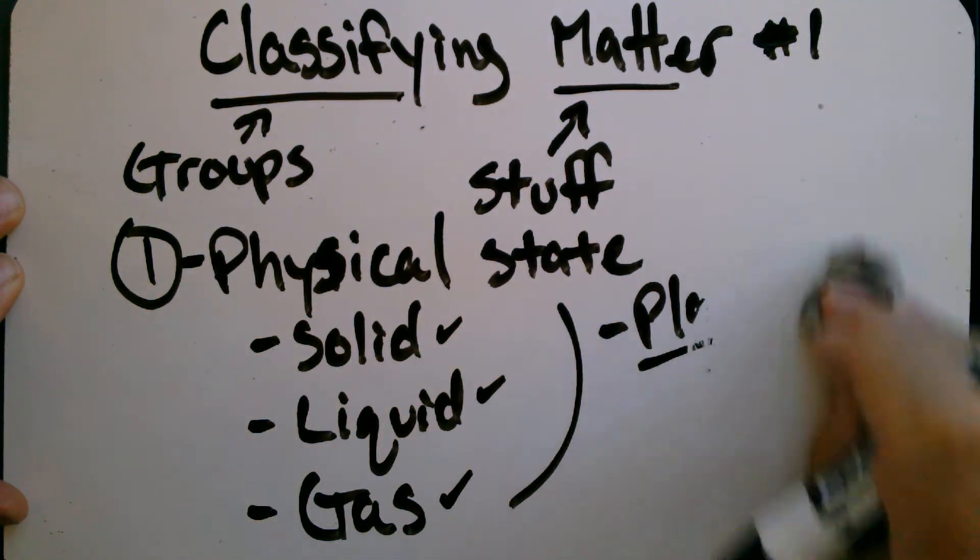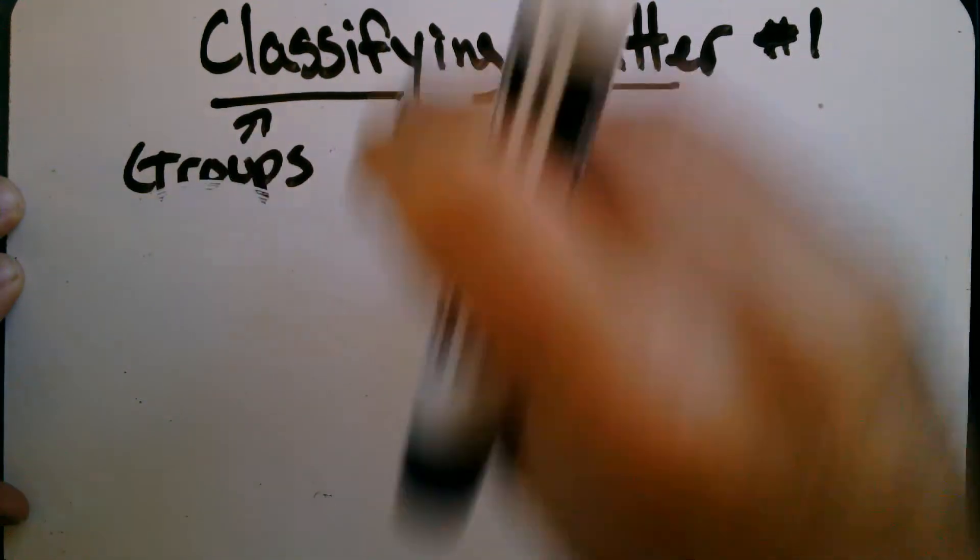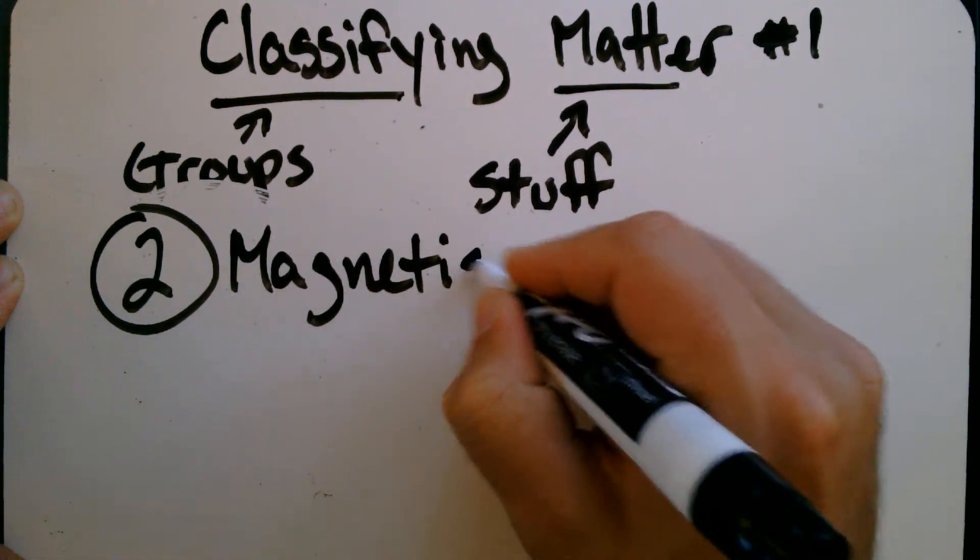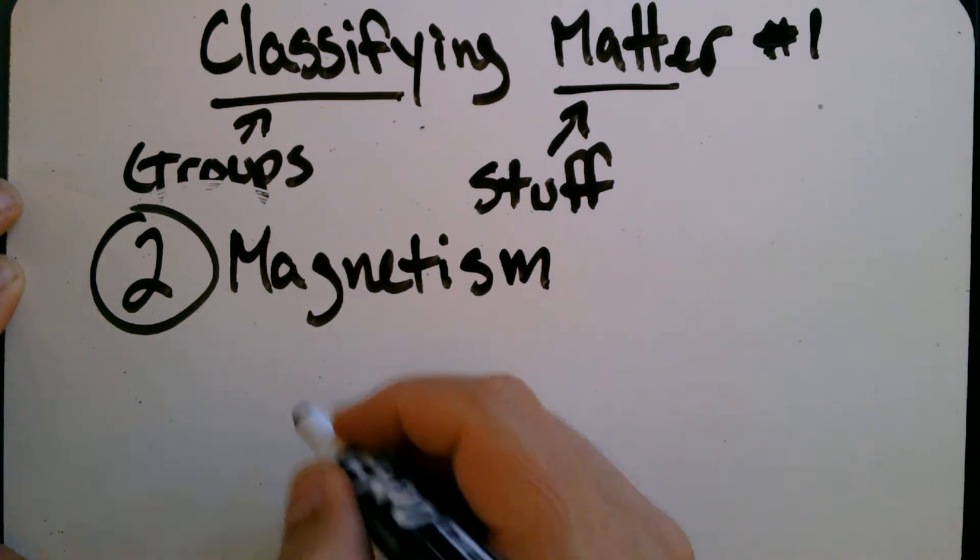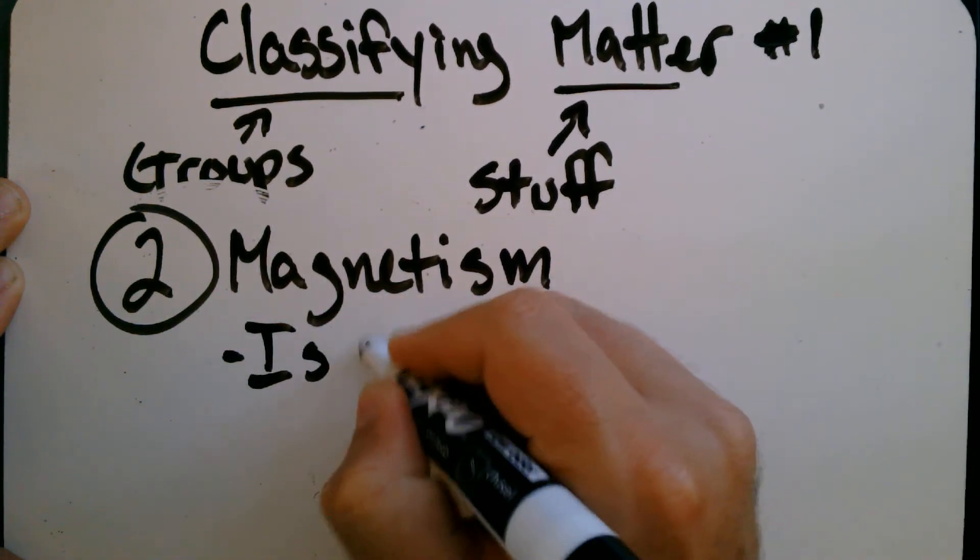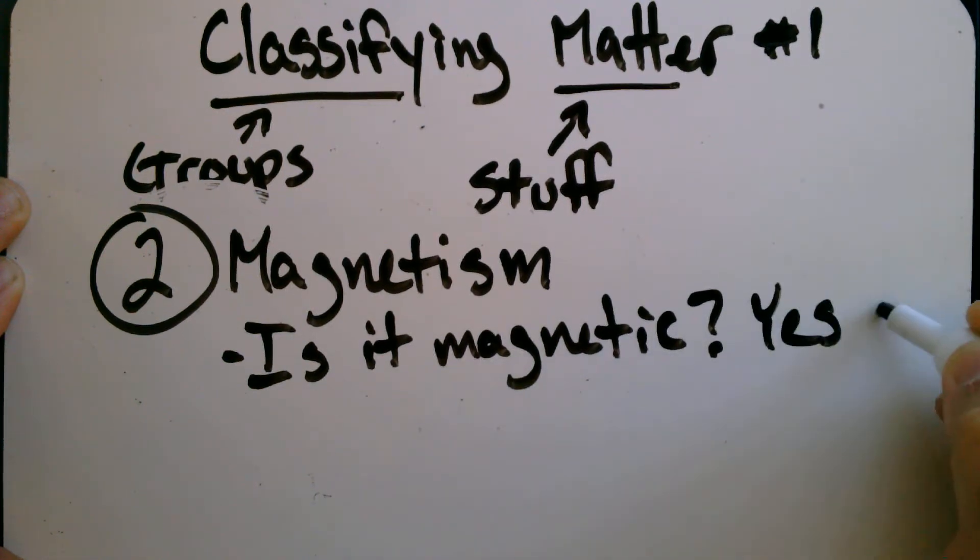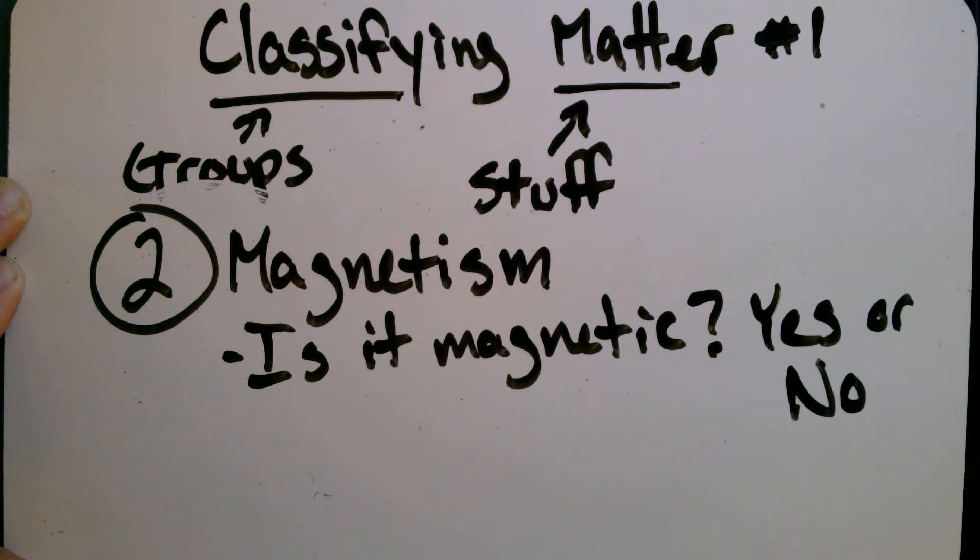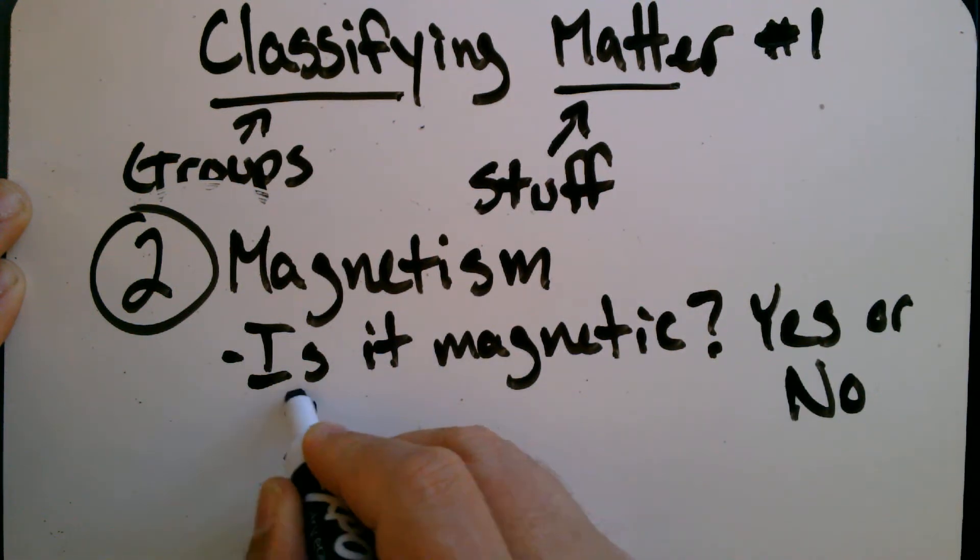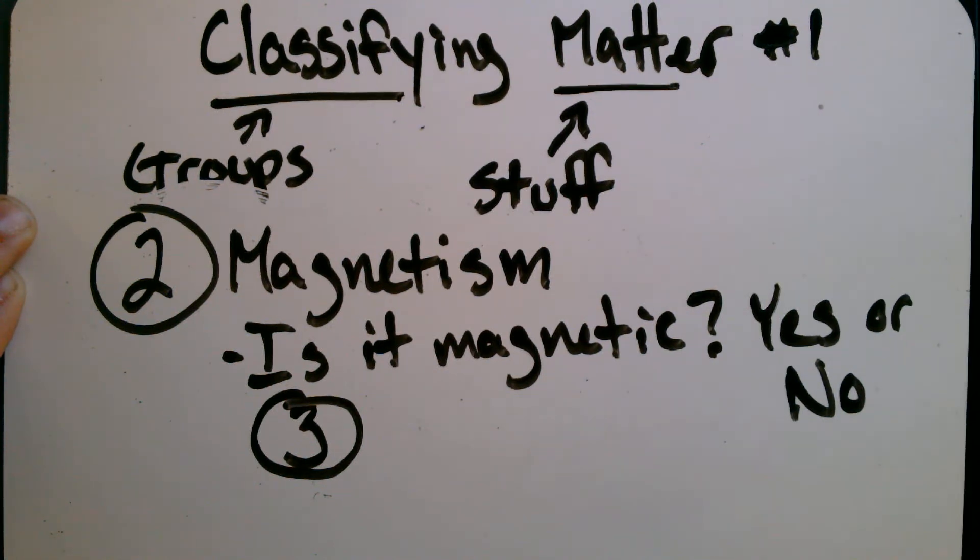All right? The next way that we are going to classify, or to put stuff into groups, second way is magnetism. And this is really just a very simple question. It's just a yes or no to the question, is it magnetic? Yes or no. Now, I'm going to say something right now that you may or may not know. There are actually only three magnetic metals. Not all metal is magnetic. There are actually only three. Three very specific metals.